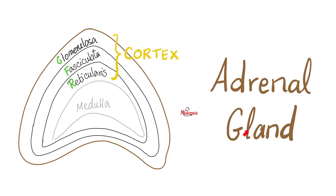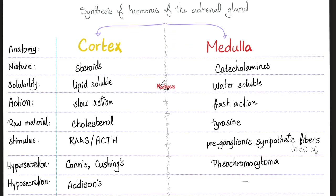The adrenal cortex is one of the employees, made of three sub-layers each called a zona or zone: zona glomerulosa, zona fasciculata, and zona reticularis. Glomerulosa is the most superficial; reticularis is the deepest. The cortex secretes steroids — these are fat hormones. The medulla secretes catecholamines, which are proteins or peptides — water-soluble hormones. Lipid hormones are slow in action, while water-soluble hormones are fast in action.